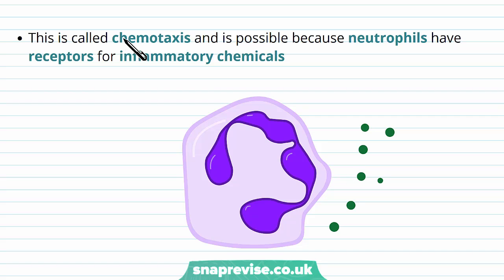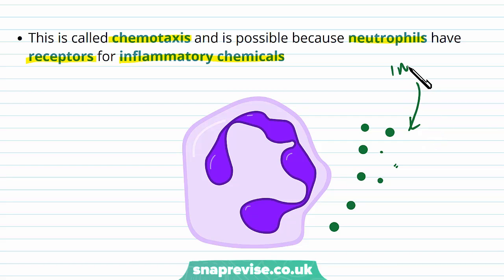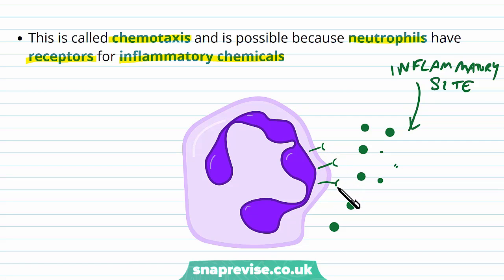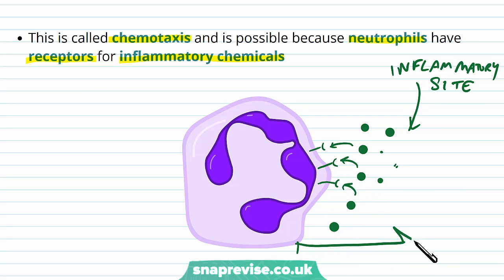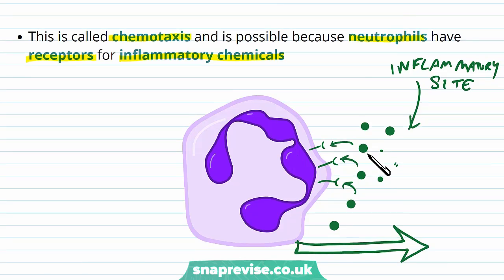This process is known as chemotaxis. It's possible because neutrophils have several receptors on their cell membrane which respond to these inflammatory chemicals. These chemicals are being released from the inflammatory site and they bind to specific receptors found on the surface of the neutrophil. When they do this, the neutrophil detects the direction they're coming from and moves in that direction, so it's recruited to the site of infection and can start clearing those infections.